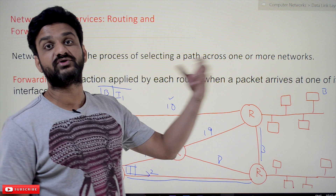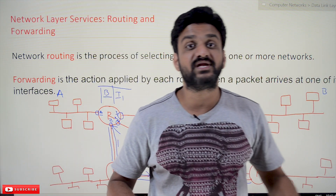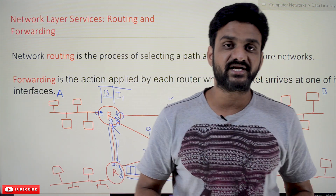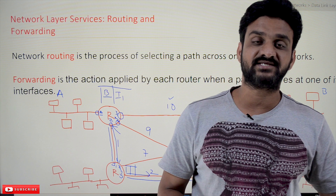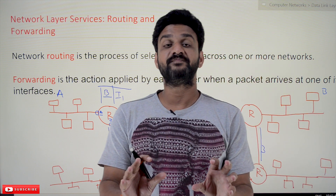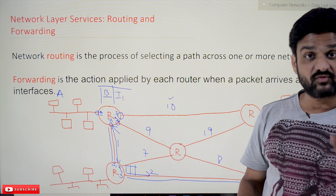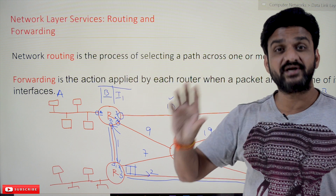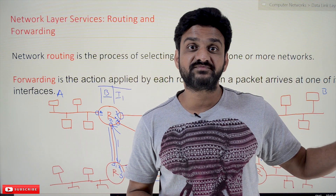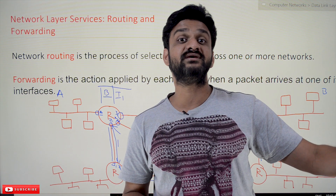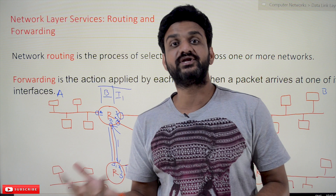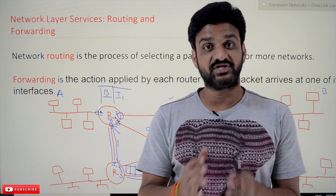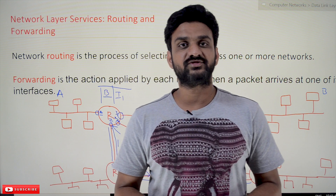Every router creates its own forwarding table or routing table, and that table is generated by routing algorithms. We'll understand different routing algorithms in later classes. Understanding routing algorithms is comparatively easy if you understand this base point: routing and forwarding are the key concerns and services provided by the network layer. This point is very important to understand. Hope you got clarity on this concept.